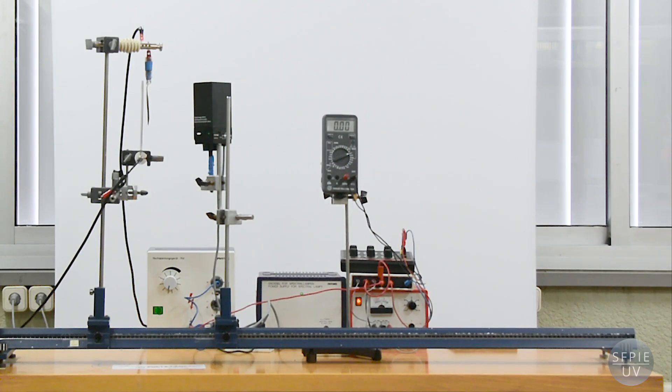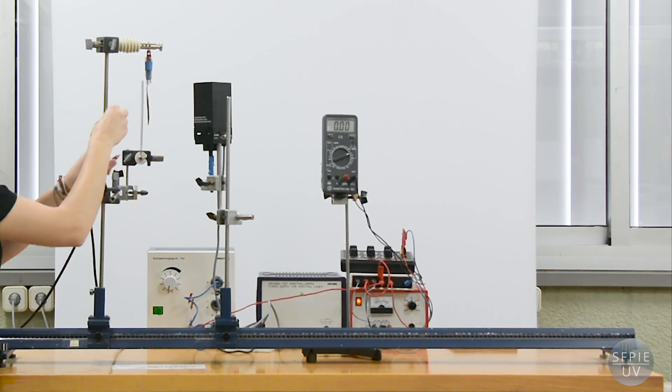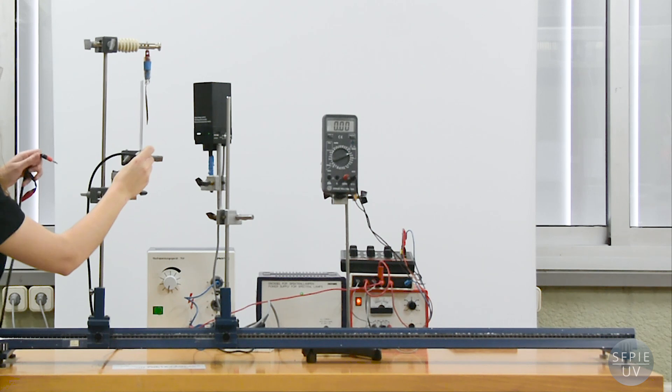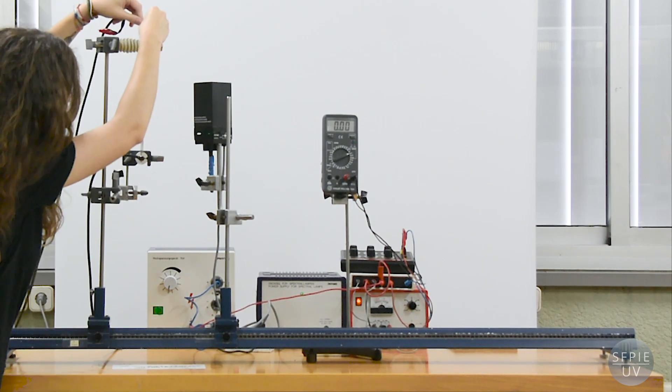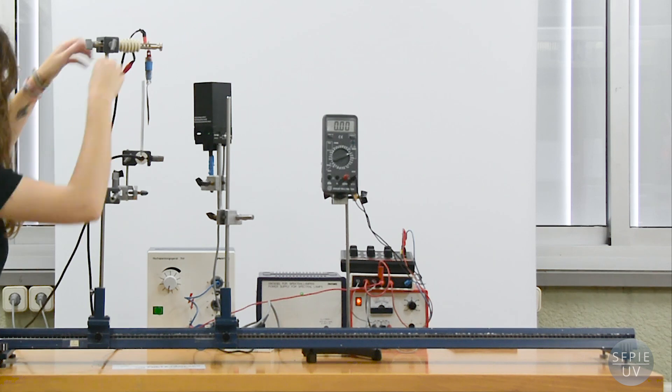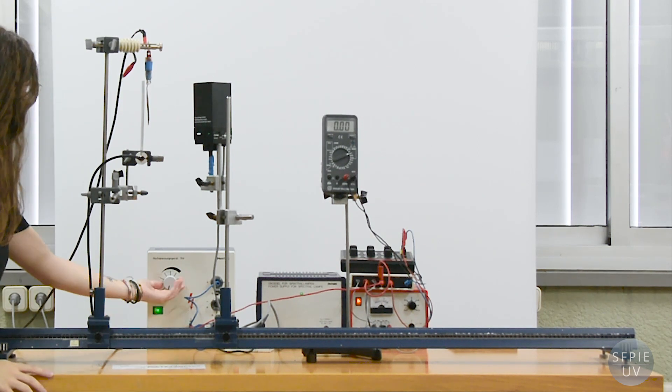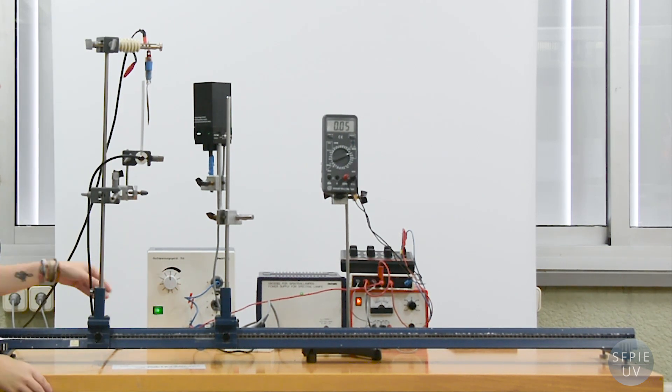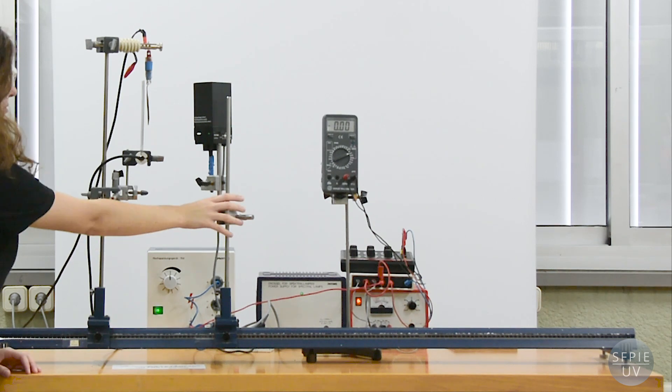We can corroborate this conclusion by reversing the connections, connecting the positive pole to the metal plate and the negative to the copper spiral.